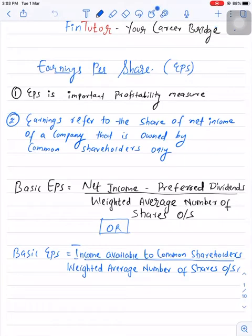Earnings per share. This concept is covered under LOSG and LOSH in the understanding income statement topic. Earnings per share, or EPS, is one of the important profitability measures.